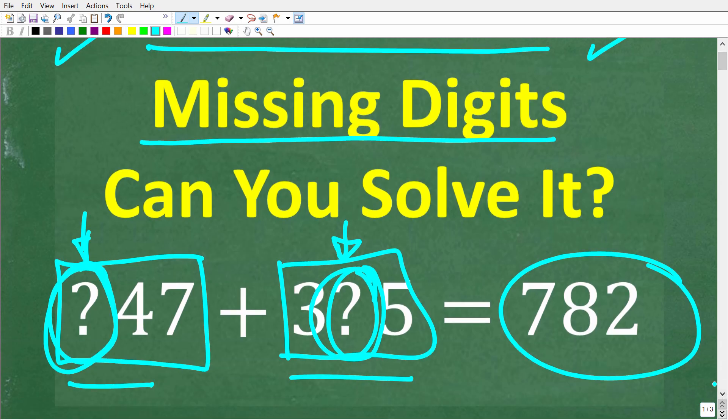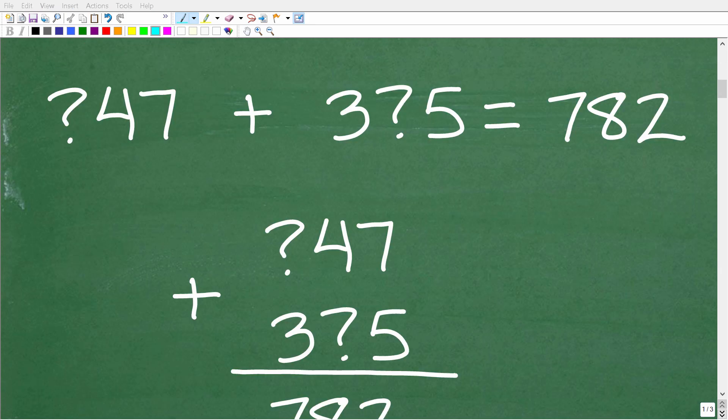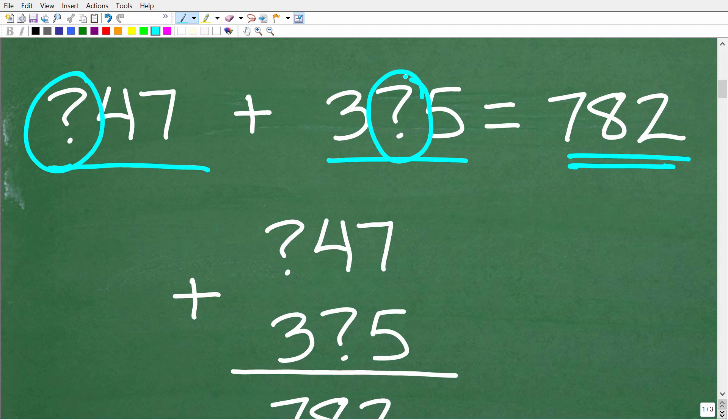All right, so one more time we have blank 47 plus 3 blank 5 is equal to 782. What is the value of the missing digits? So there's different ways to think about this problem. But I think the easiest way to approach the solution is the following. Our original problem is question mark 47 plus 3 question mark 5 is equal to 782. So these question marks represent the missing digits that we're trying to figure out.